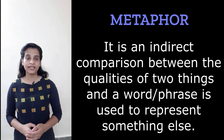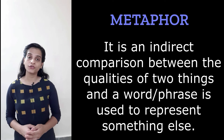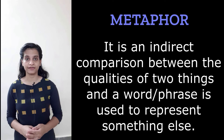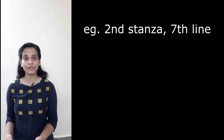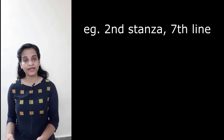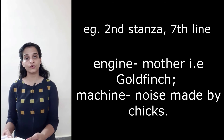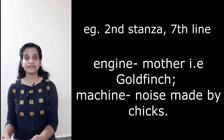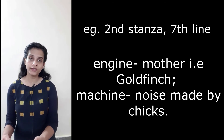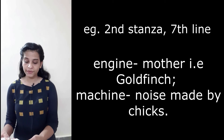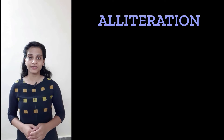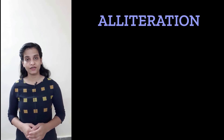Unlike simile, metaphor is an indirect comparison between the qualities of two things, where a word or phrase is used to represent it. An example is from the seventh line of the second stanza: 'engine of the family.' Here the word 'engine' represents the mother goldfinch, and the word 'machine' represents the noise made by the chicks. The third poetic device is alliteration — the repetition of a consonant sound at the beginning of two or more consecutive words.